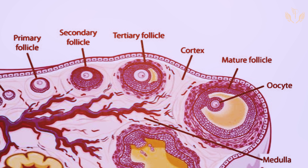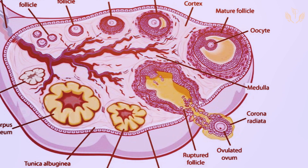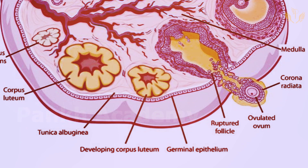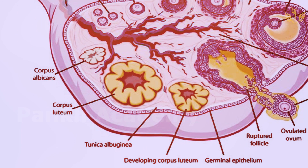The mature Graafian follicle contains the ovum, surrounded by fluid on all sides. In the next stage, the follicle bursts — this is ovulation. The ovulated ovum is released, surrounded by the corona radiata layer. After ovulation, the remaining structure becomes the developing corpus luteum, which then forms the corpus luteum before degenerating.